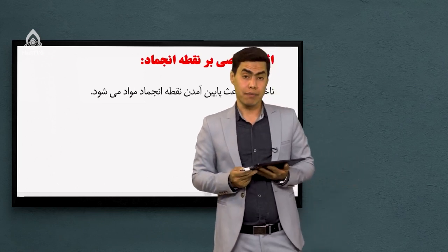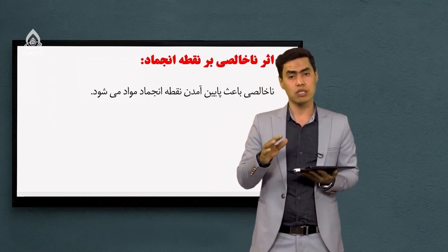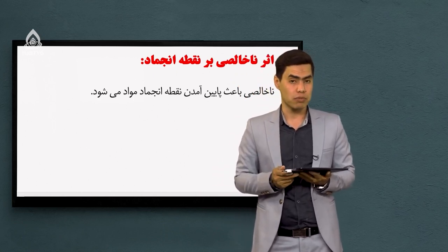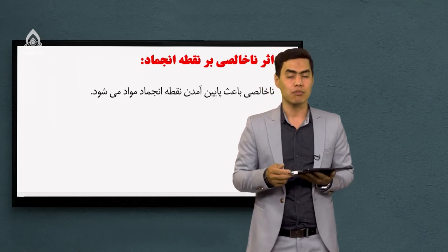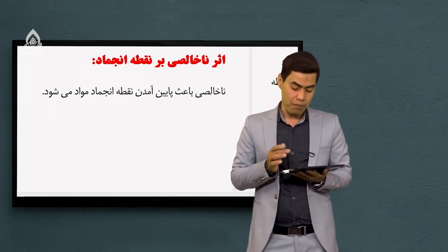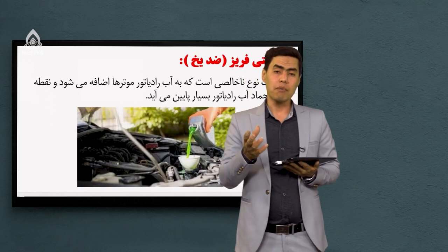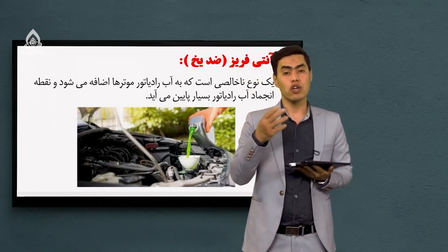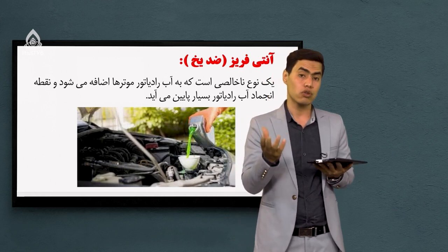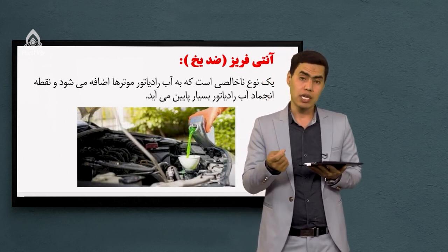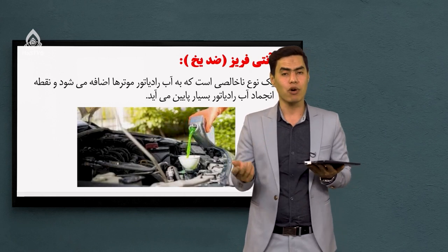تأثیر بعدی: ناخالصی روی نقطه انجماد چه تأثیری داره؟ ناخالصی باعث پایین آمدن نقطه انجماد در مواد میشه. به عنوان مثال، آنتی‌فریز یا ضدیخ که به عنوان یک ماده ناخالصی داخل رادیاتور موترها می‌زنن تا در فصل سرما از یخ‌زدگی آب داخل رادیاتورها جلوگیری شود. پس آنتی‌فریز یک ناخالصی است که باعث پایین آمدن نقطه انجماد در مواد میشه.